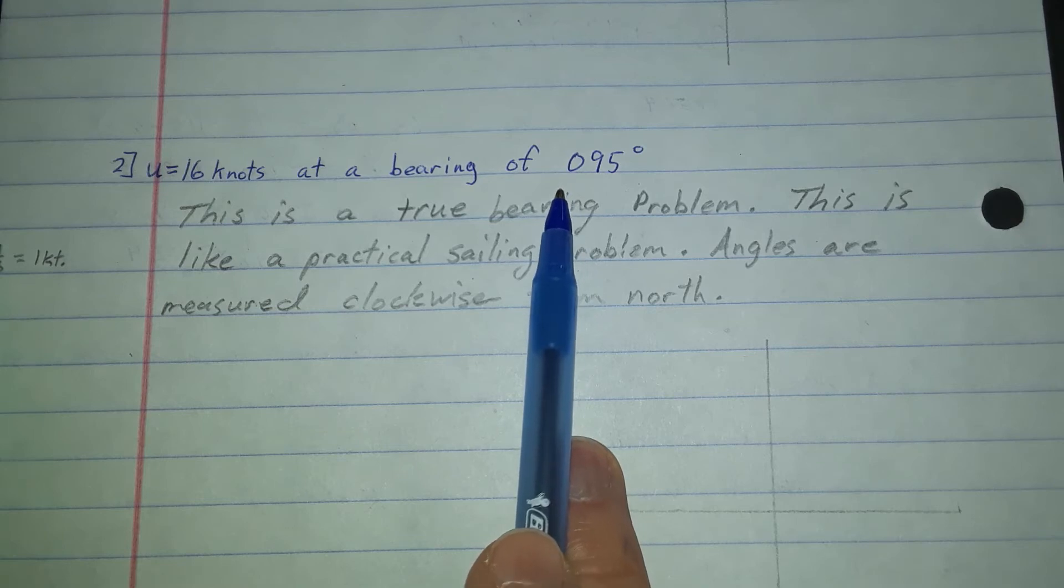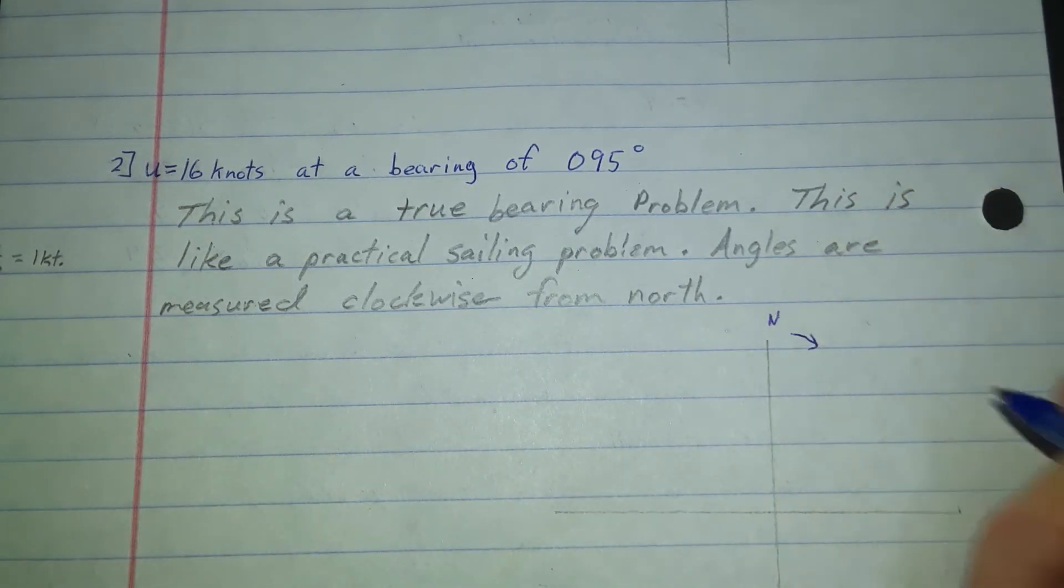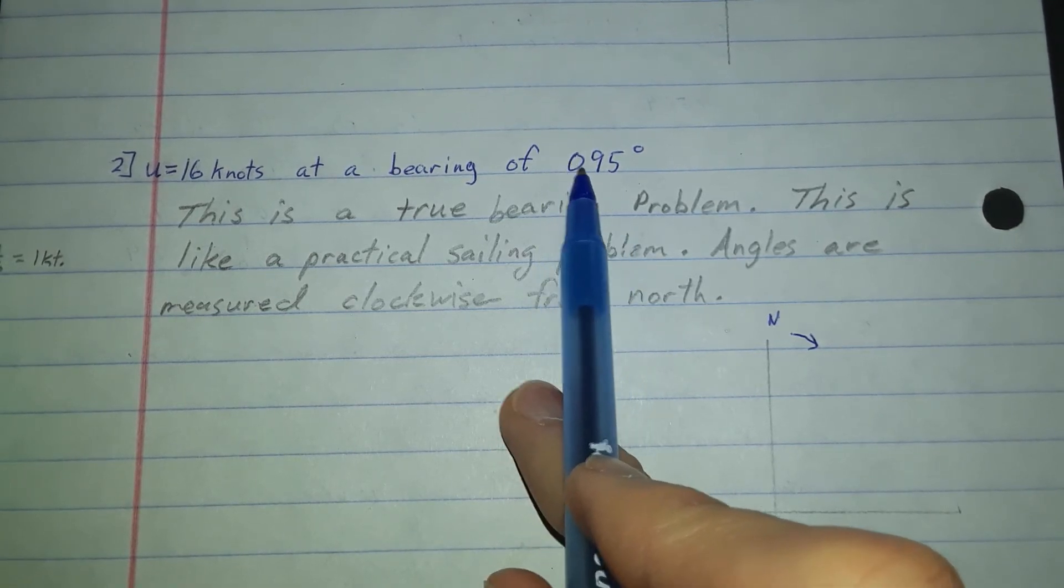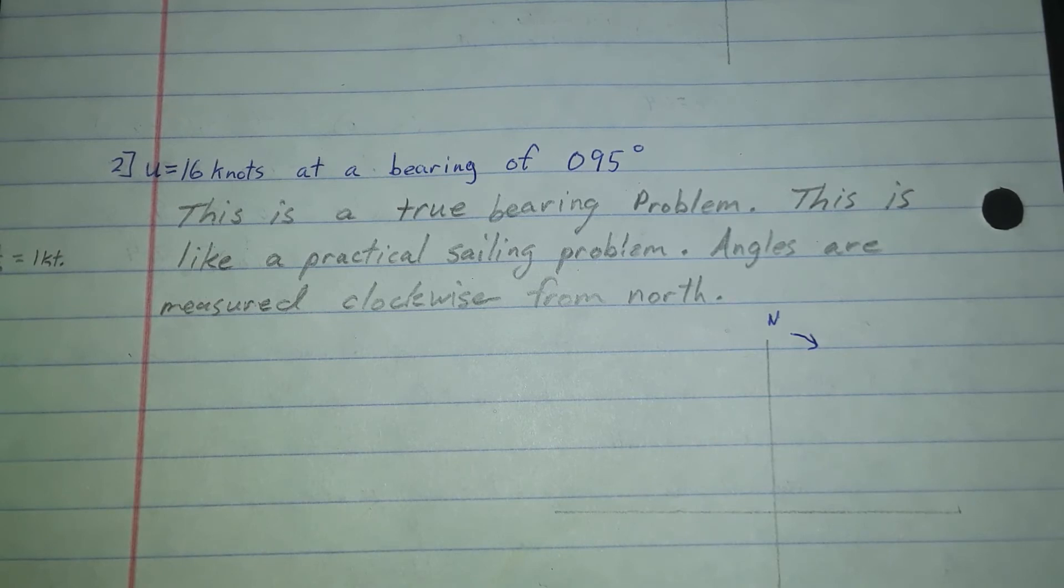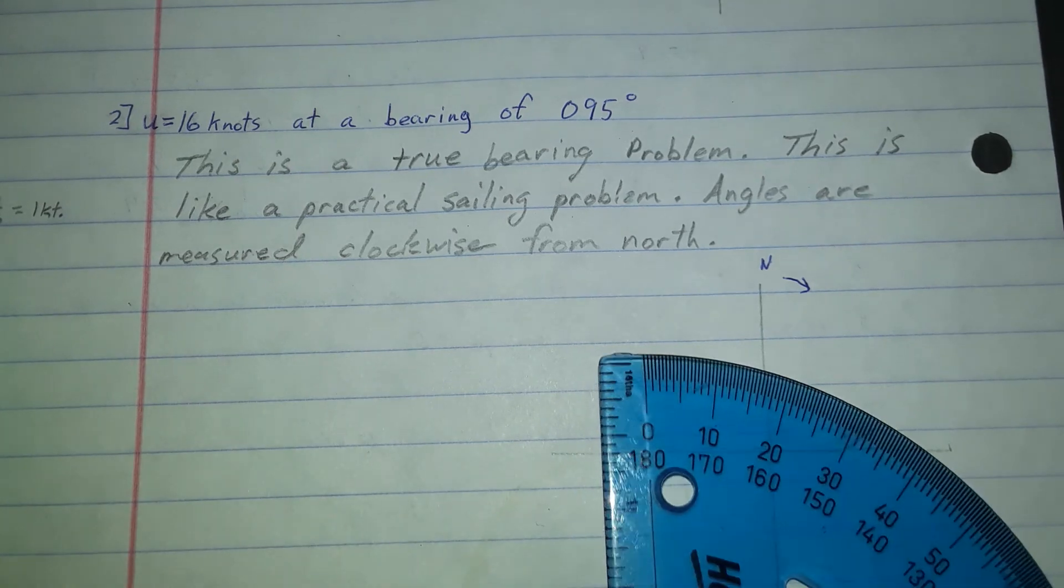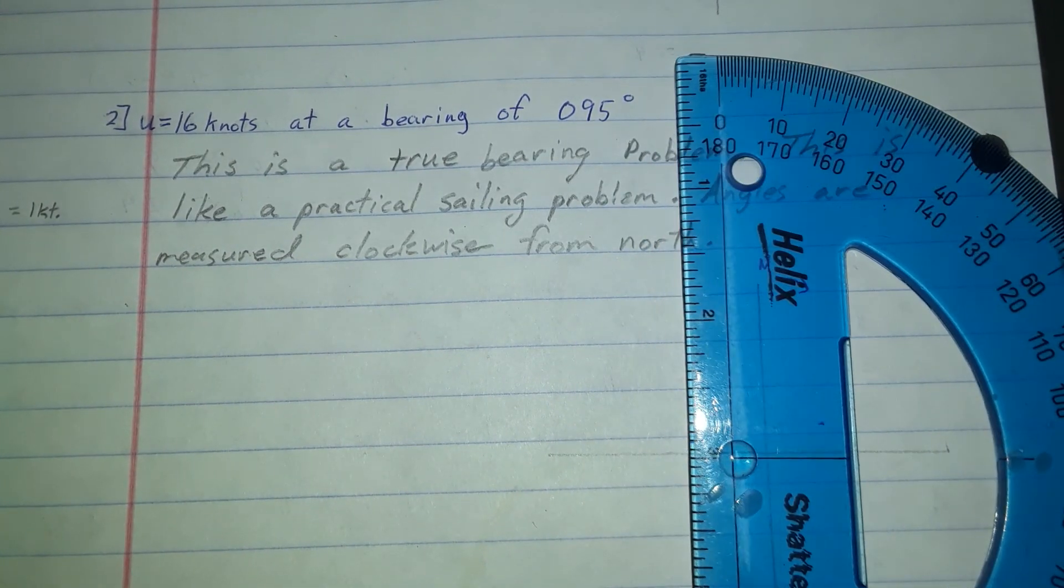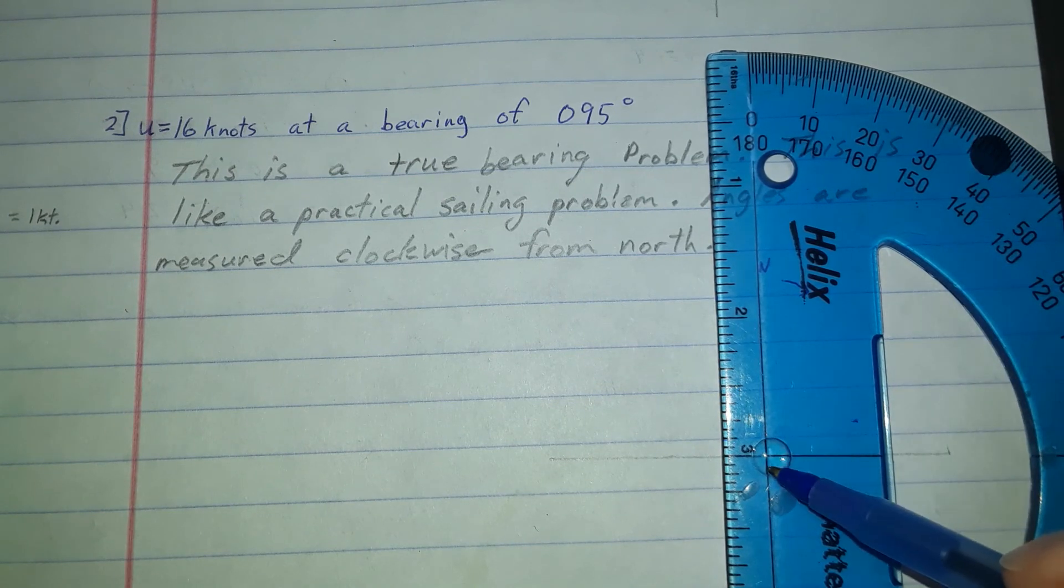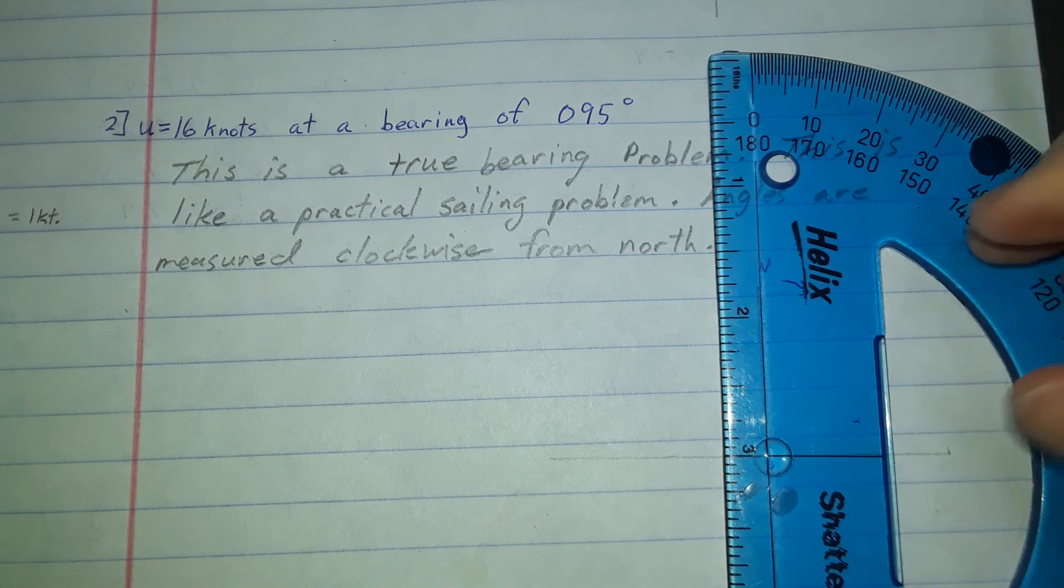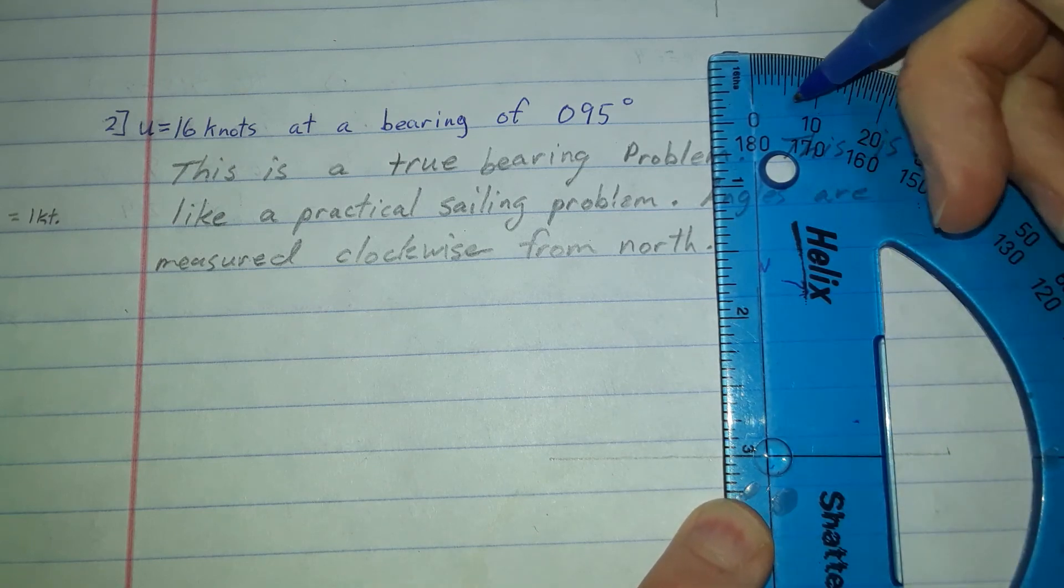We're bearing 095 so we're counting from north and we're counting clockwise when we're doing true bearings. True bearings are done in three numbers. That helps avoid confusion when communicating. A lot of things that you do in sailing and aviation in the military, you have to make sure that you eliminate as many mistakes as possible. We're going to measure 95 degrees this way. When I bring my protractor back in, I'm going to have it flipped opposite of what I had before.